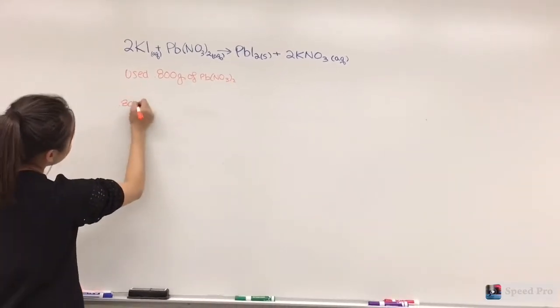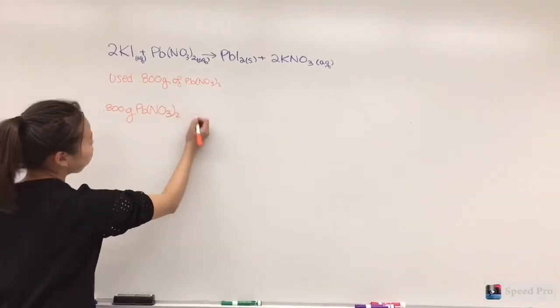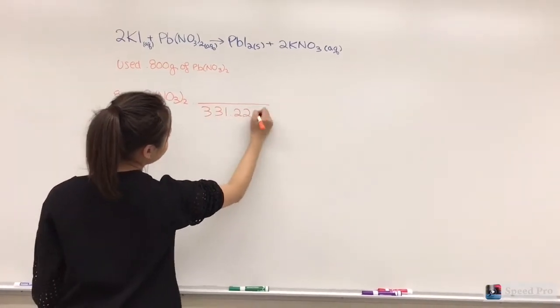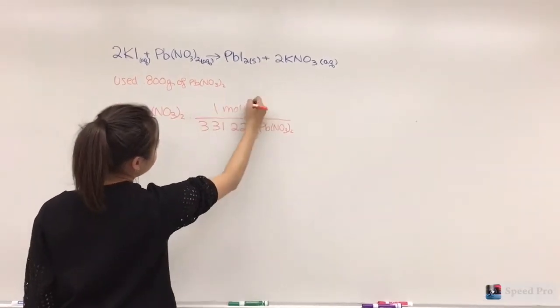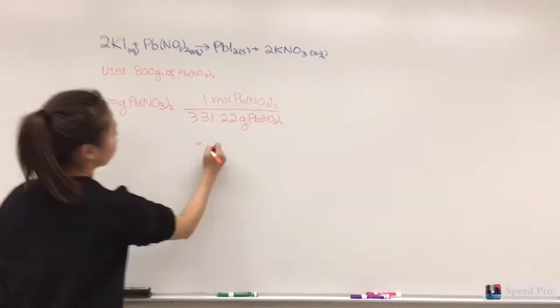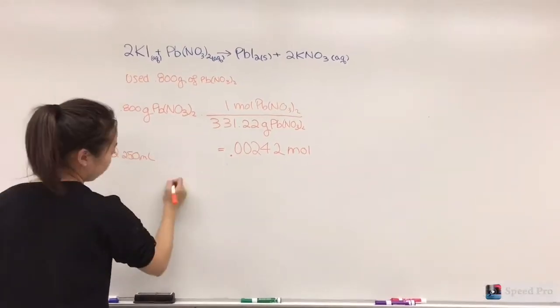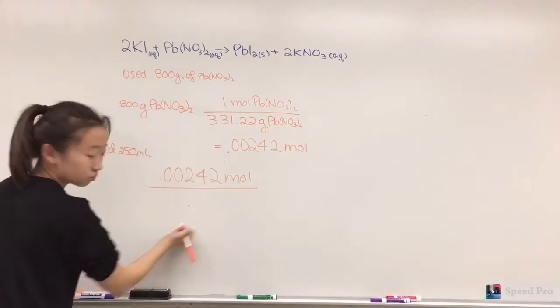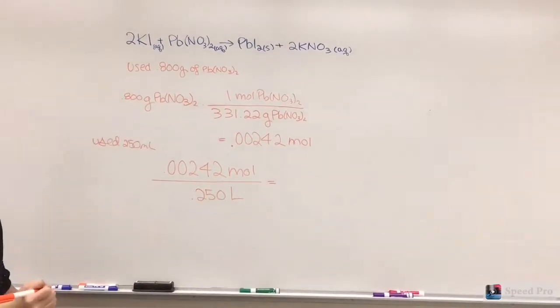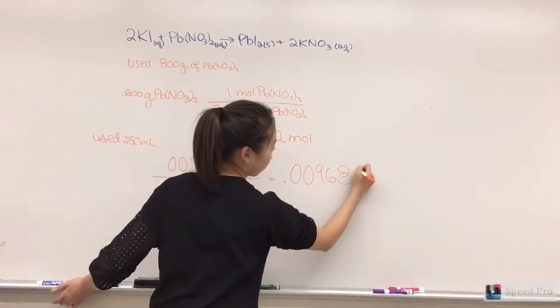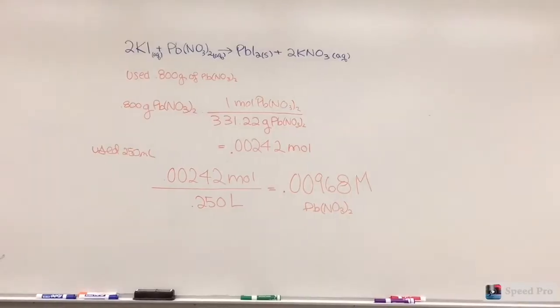In the same way, it was found that 0.800 grams of solid lead-2 nitrate contained 0.00242 moles and that the molarity when dividing by 0.25 liters was 0.00968 molar. This further proves that the potassium iodide was in excess because the molarity of its 250 milliliter solution is more than double that of the lead-2 nitrate solution.